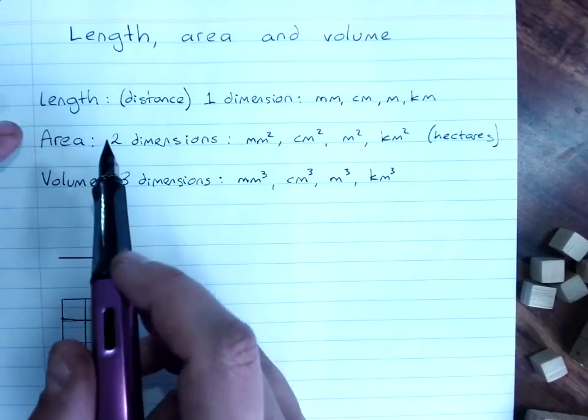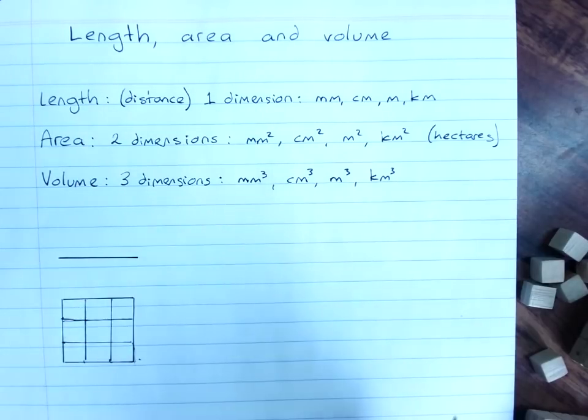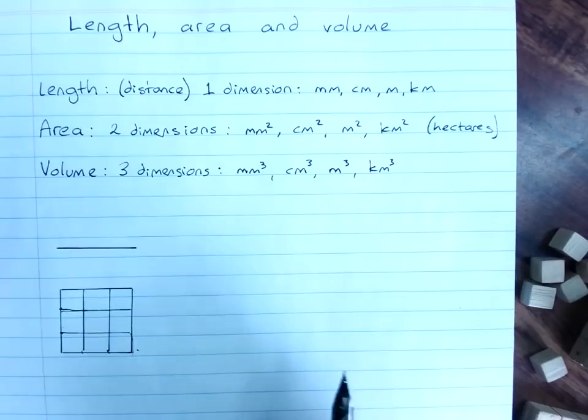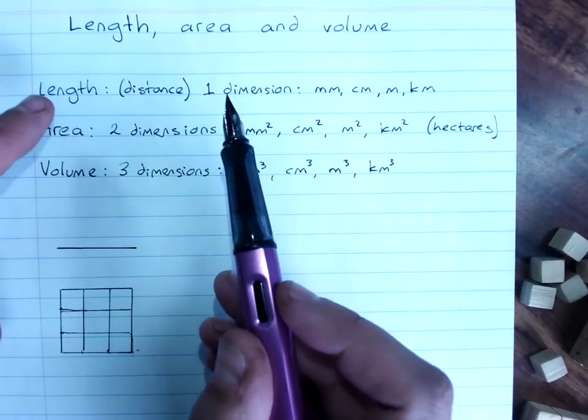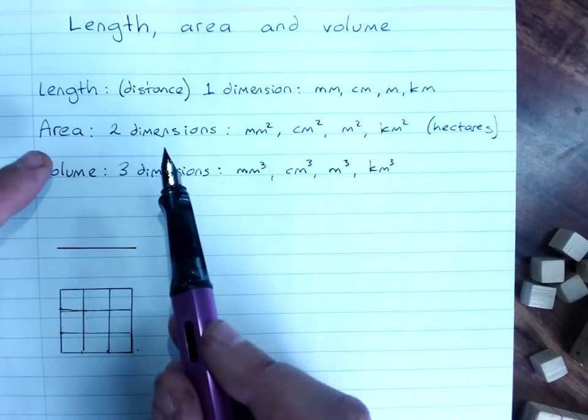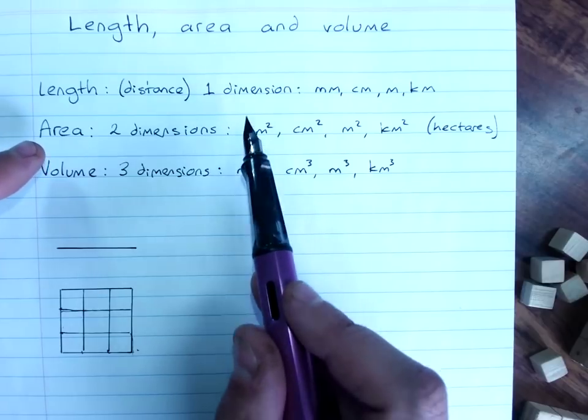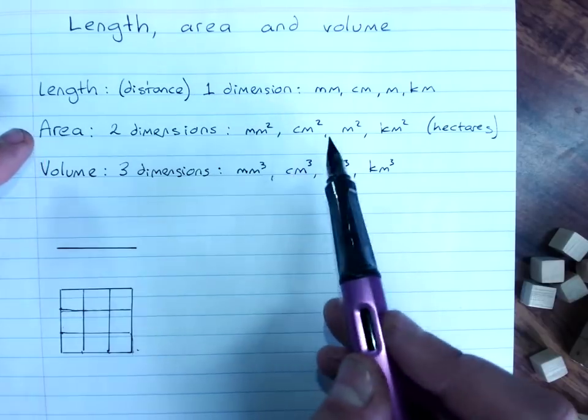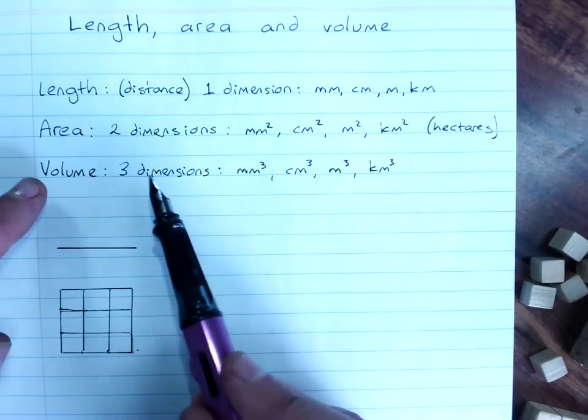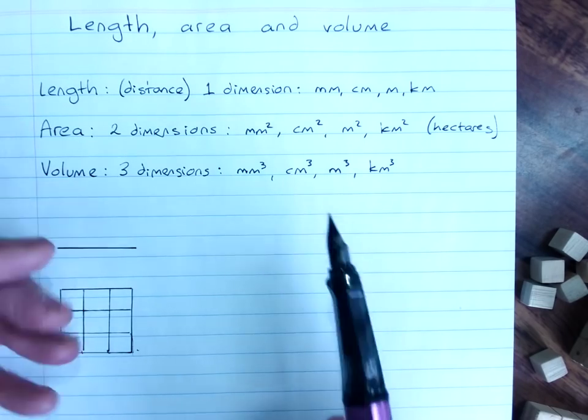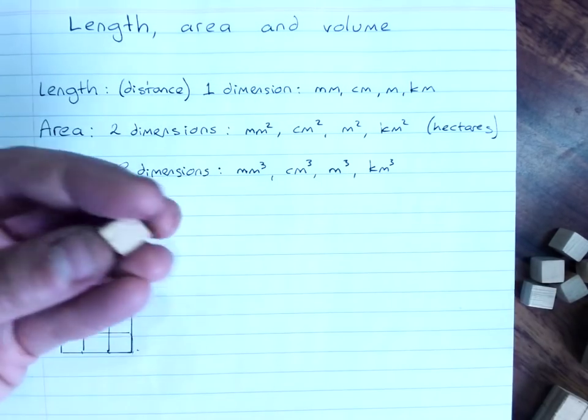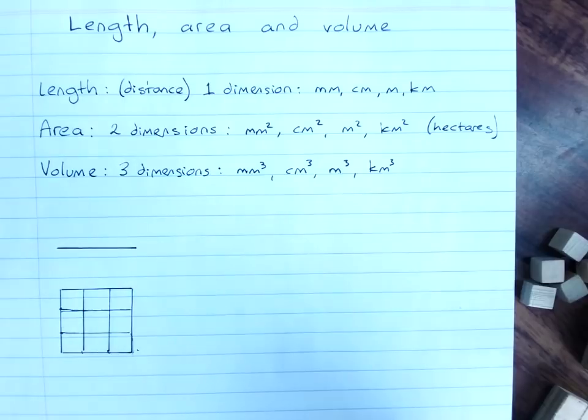So, length, area, and volume are often the three things that we might want to know about shapes. Length, one dimension. Area, how much space it takes up in two dimensions, so flat space on the page. And volume, three dimensions, how much physical space it takes up in three dimensions.